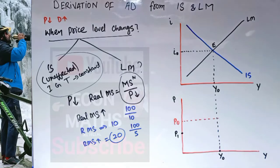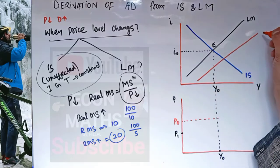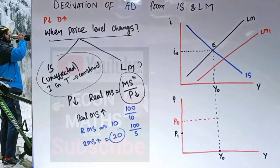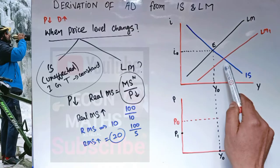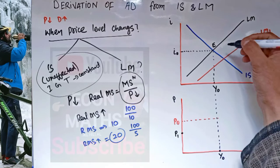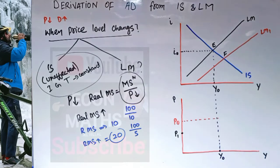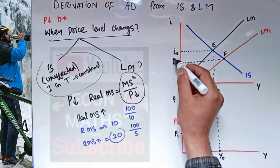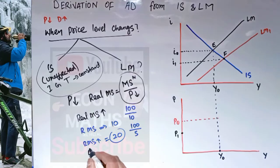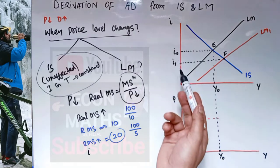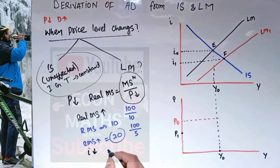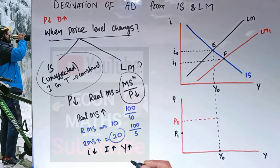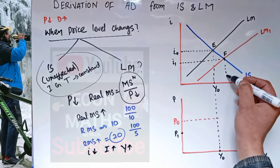As a result of this increase in real money supply, the LM curve shifts to the right — let us call it LM₁. Now the IS curve intersects LM₁ at a new point F. Corresponding to this point F, the interest rate has decreased from i₀ to i₁.